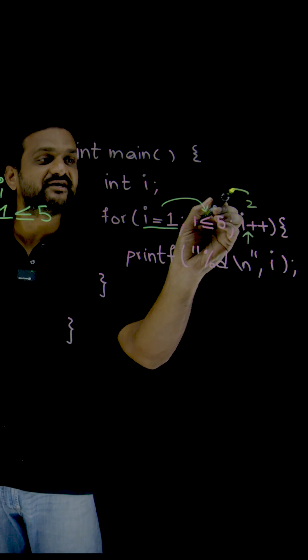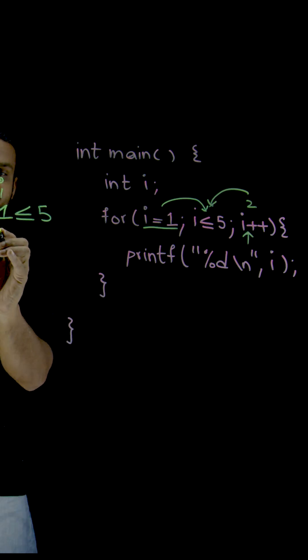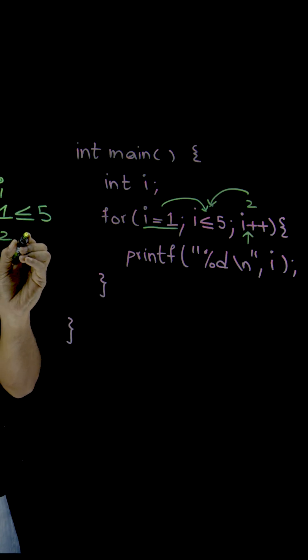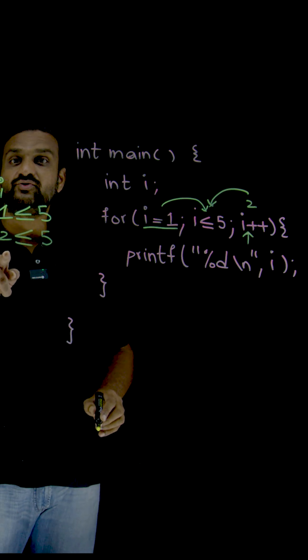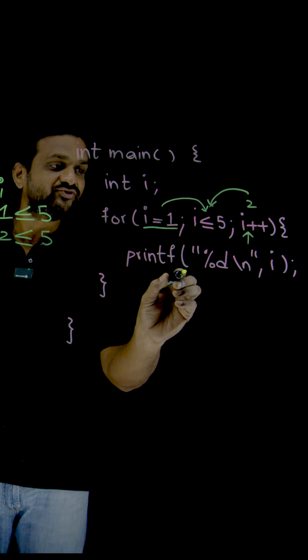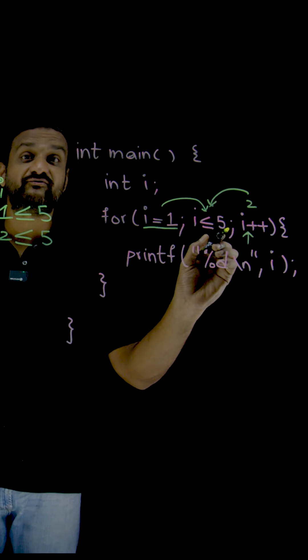Now we have to check the condition again. So what is the condition? With the new value of i, 2 less than or equal to 5. Is it true? Yes, it is true. So this is true. Now we are going to print the value of 2.